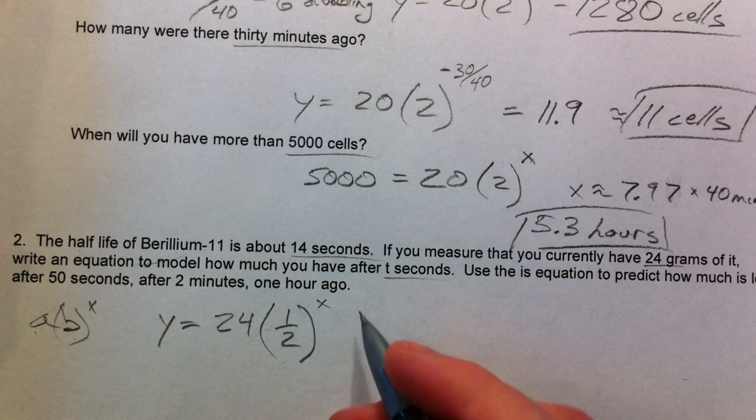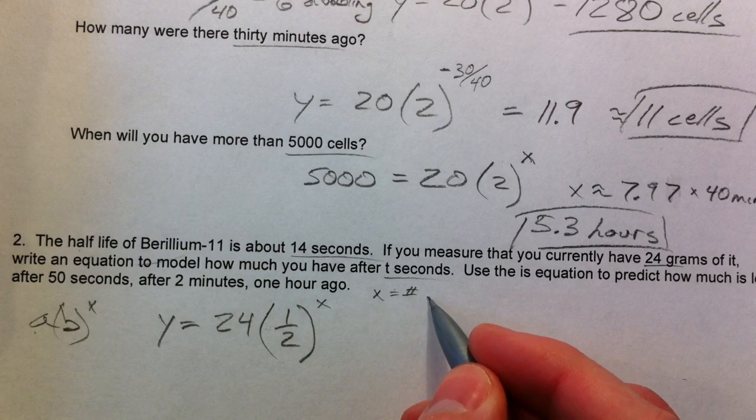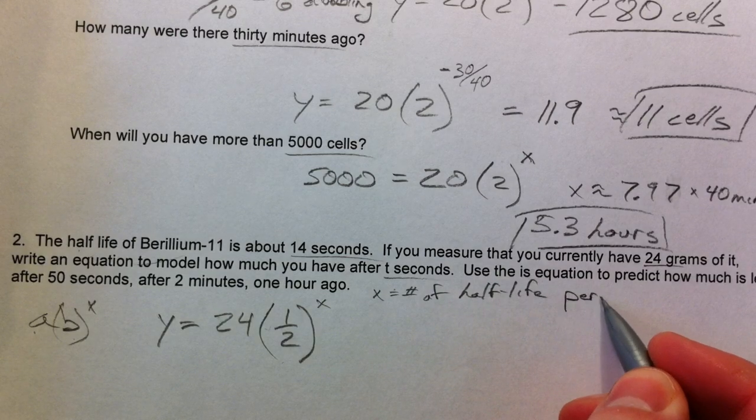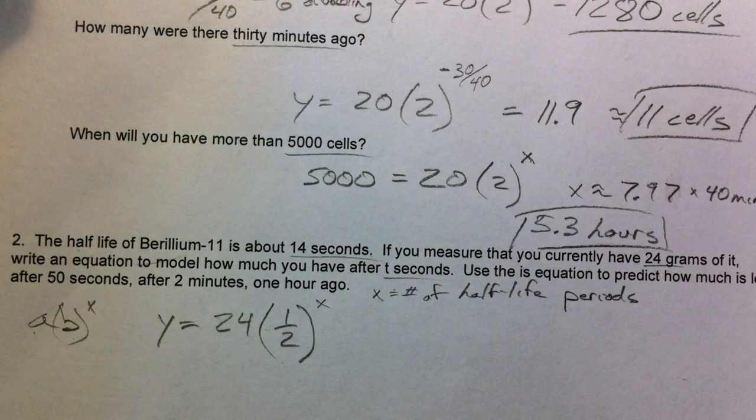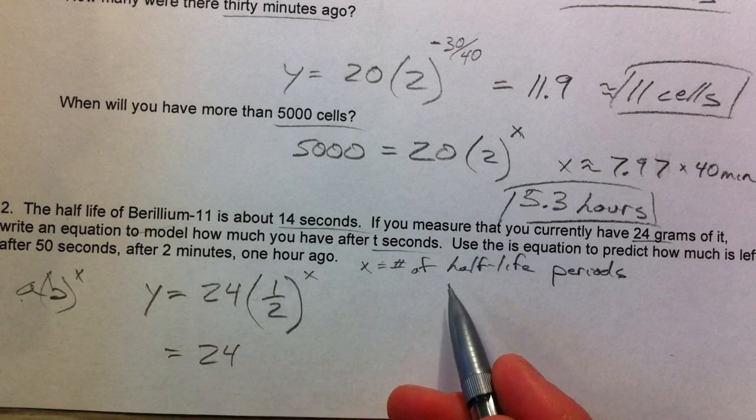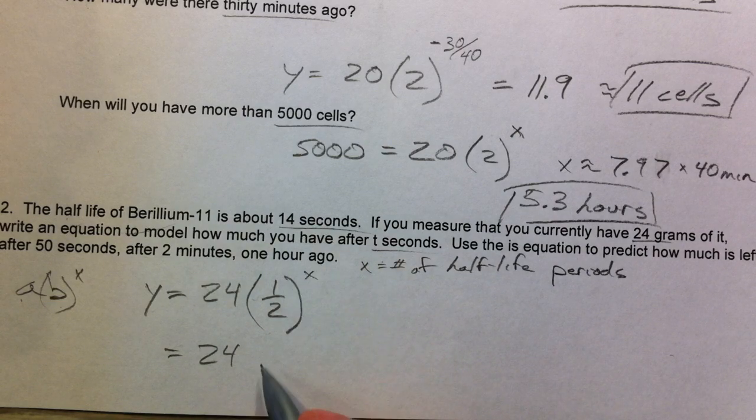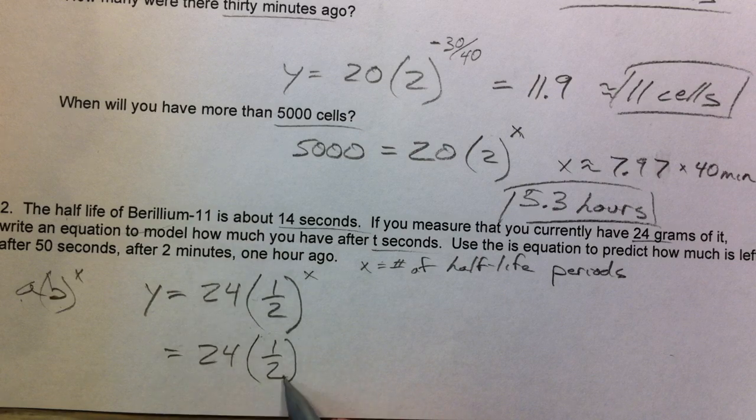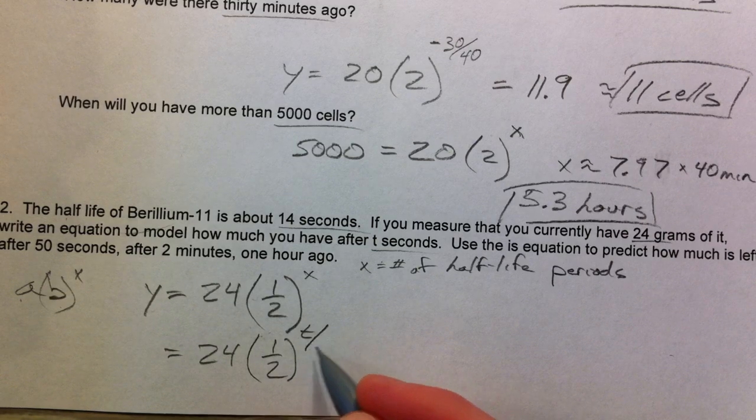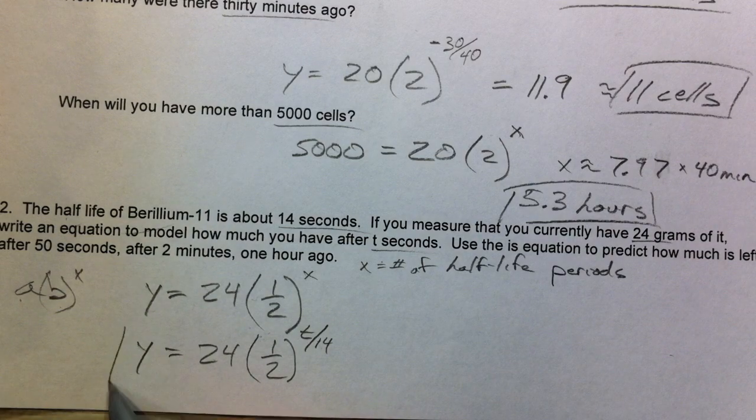But we want t seconds, and right now x is representing number of half-life periods. So what we're going to say is every single time to figure out the amount of half-life periods after, say, 28 seconds, we would divide it by 14. So our equation is going to be 24 times 1/2 raised to the t divided by 14, where t is in seconds. That's going to be our equation.